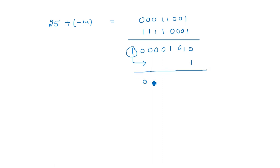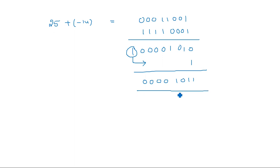This carry needs to be added again to the result to get the final value, which is 0 0 0 0 1 0 1 1. This carry is known as the end-around carry. In ones complement, you must not ignore this carry — whereas in twos complement you have to ignore it. The final result is 11 in decimal, which checks out since 25 minus 14 equals 11.